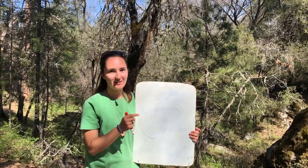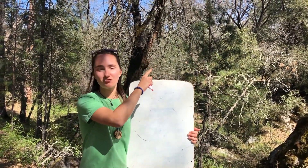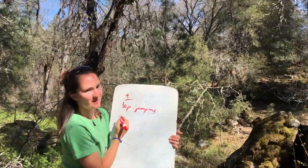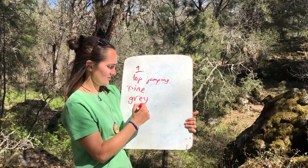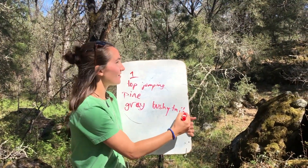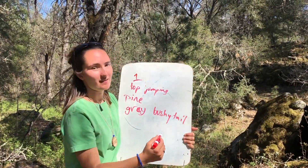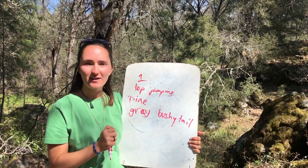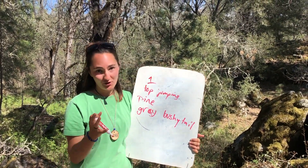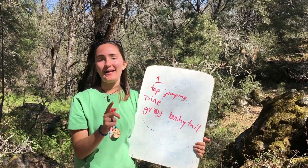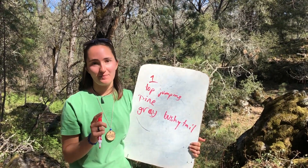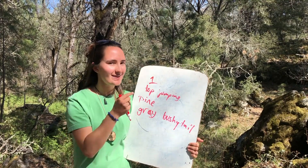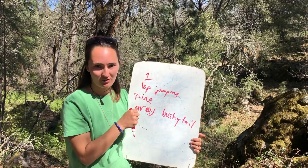I've just seen a squirrel in the top of this tree right here jumping. So I think it might be the same type of squirrel that Margaret saw — we have those squirrels all over the place here. You might have different squirrels where you're from. Different types of squirrels are everywhere, so just write down those notes so you can see what you think you found.